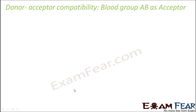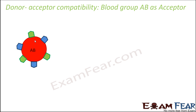Now let us look at the donor-acceptor compatibility with blood group AB as acceptor. If AB is the acceptor, both A and B antigens are present. So what are the antibodies corresponding to them which are safe? There will be no antibodies, because there should be no antibodies for AB antigens to be safe.